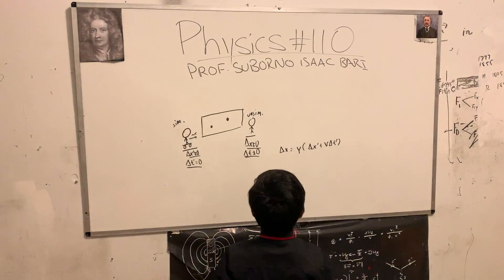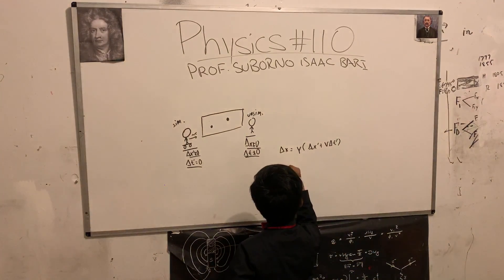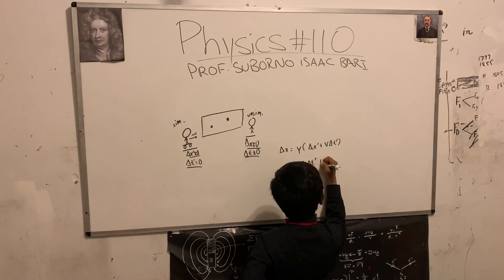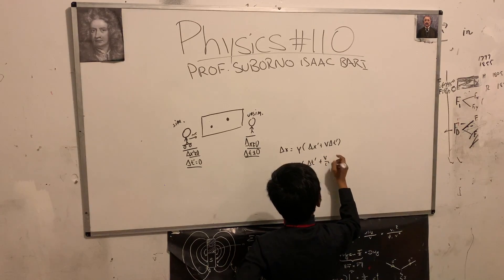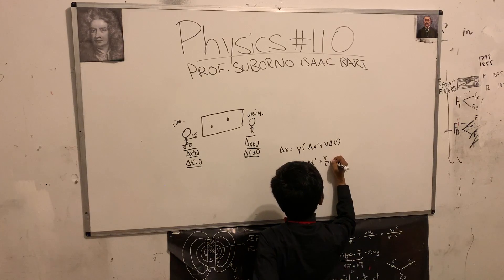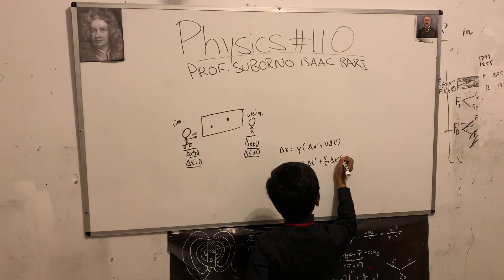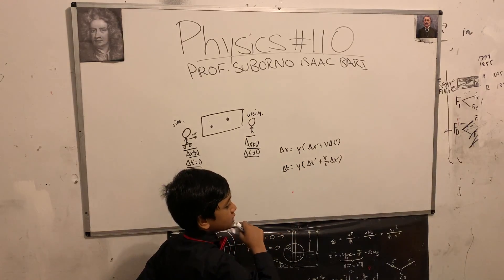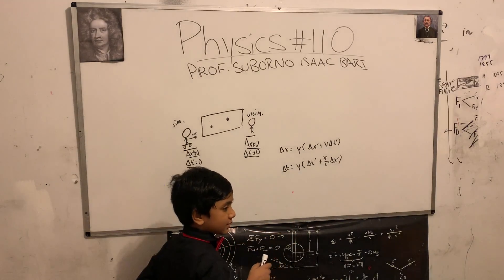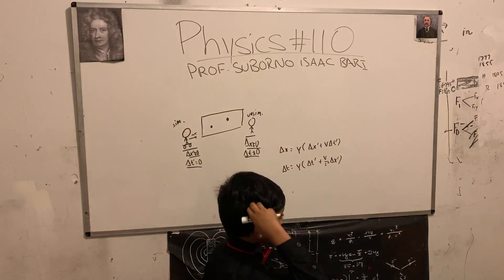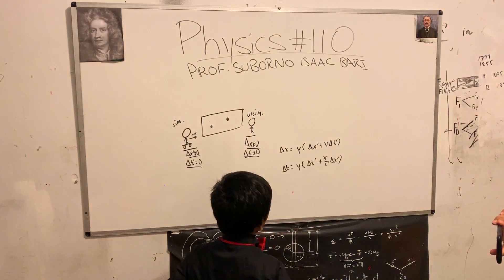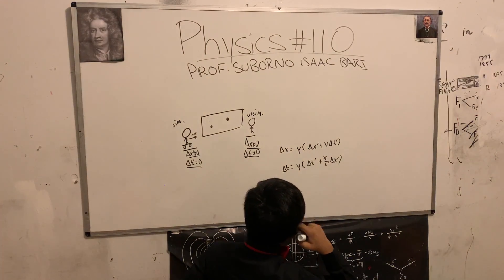And then we had this, I believe: delta t equal to gamma delta t prime plus v over c squared delta x prime. I believe that's what the thing was. Anyways, you can correct me if I made any mistakes here. I'm just reciting these from my memory.